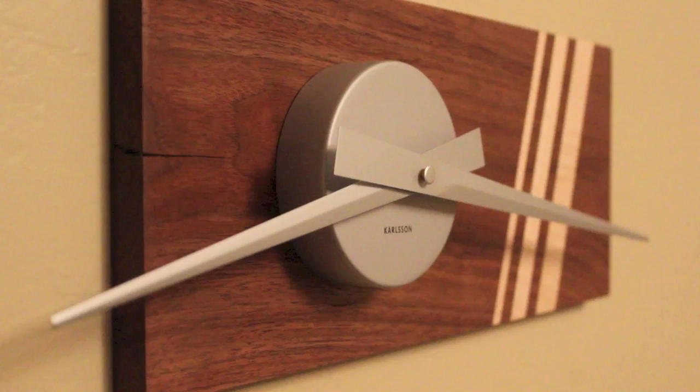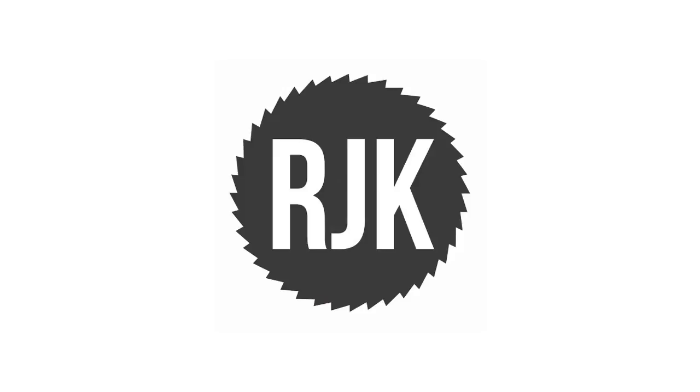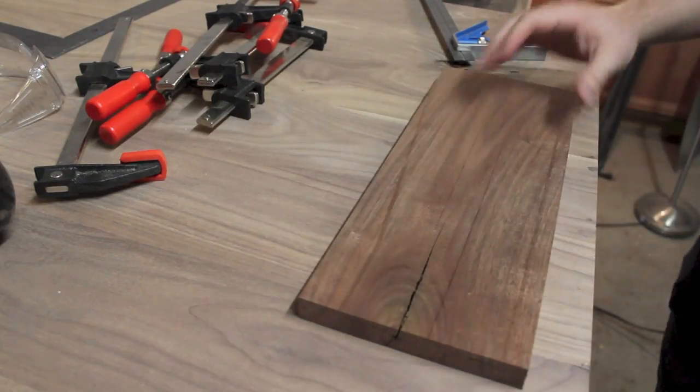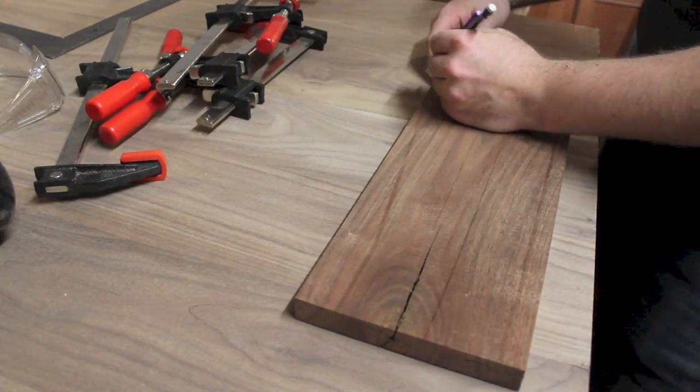Here's how to make a modern style clock. I started with a half inch thick piece of walnut that was five inches wide.